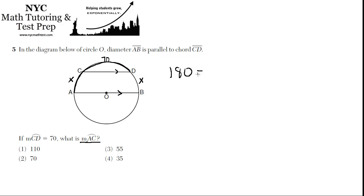So 180 degrees, that whole arc is made up of X plus 70 plus X. So I'll say 2X plus 70, and then we can just solve for X.